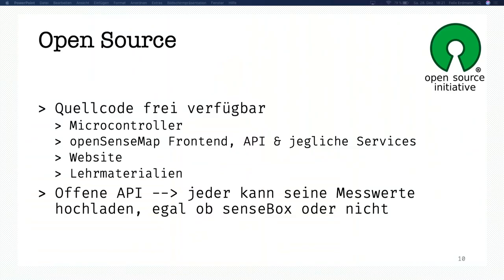The source code is freely available on GitHub — that's the sketch, the code that's on the Arduino, the Sensebox MCU, the front-end and back-end. All the API and the services we developed, you can download and look at the source code. The website and the teaching materials are all available on GitHub, and the API is also open so everybody can upload their data.